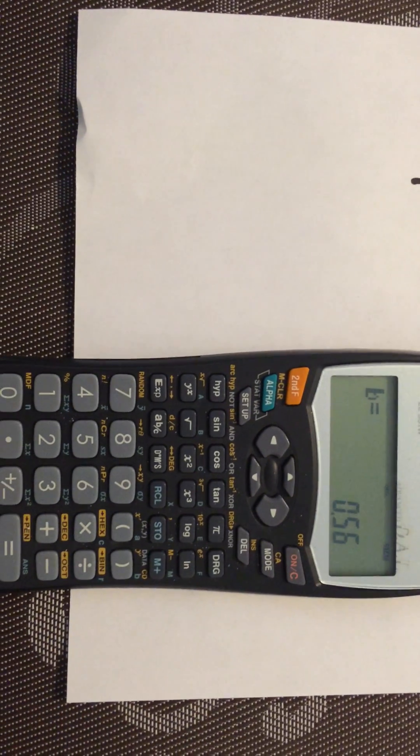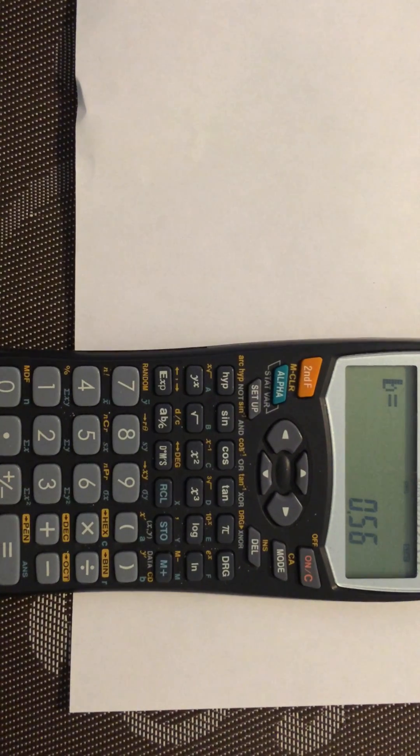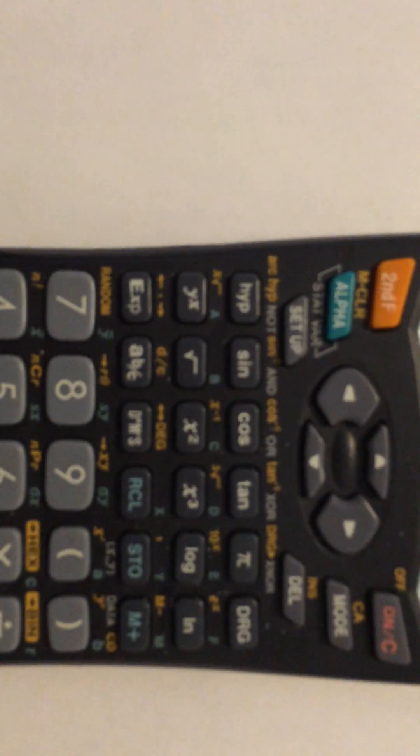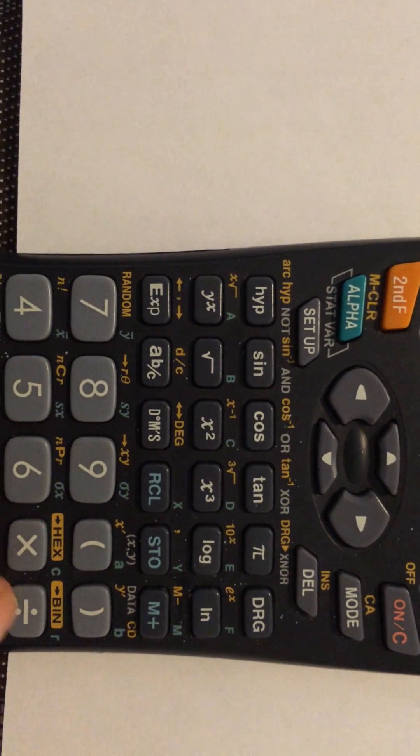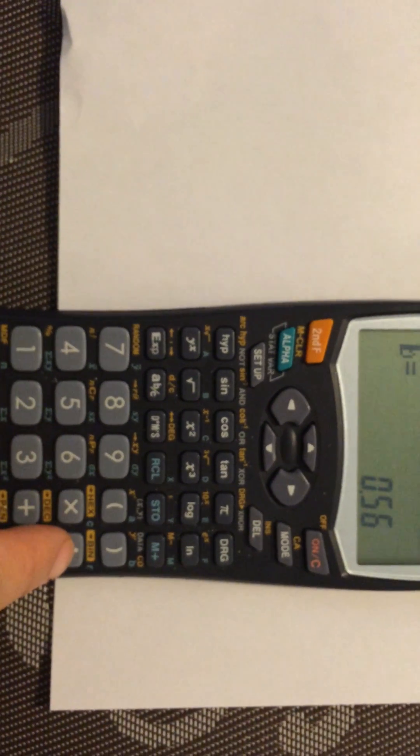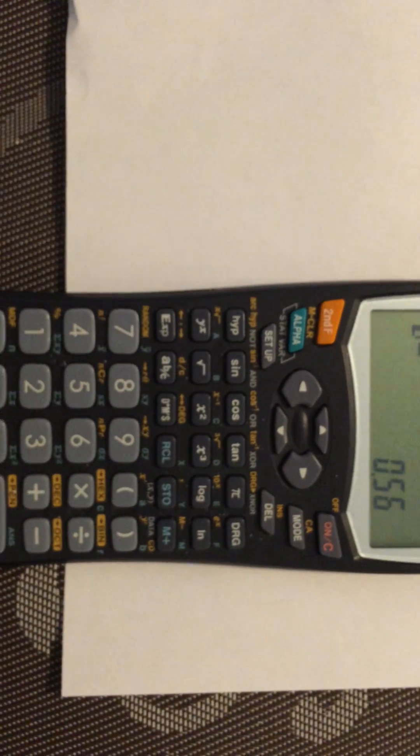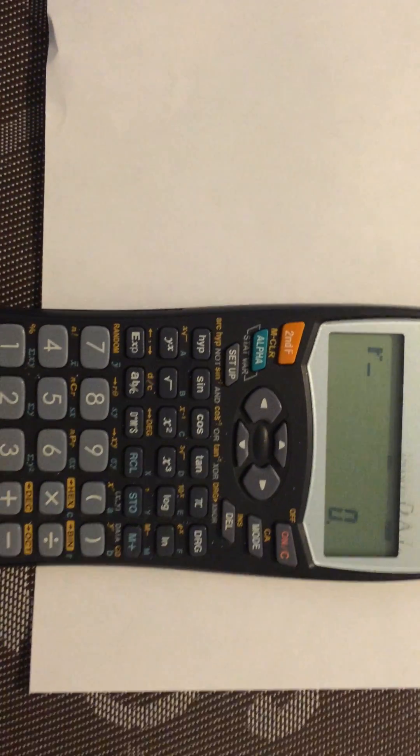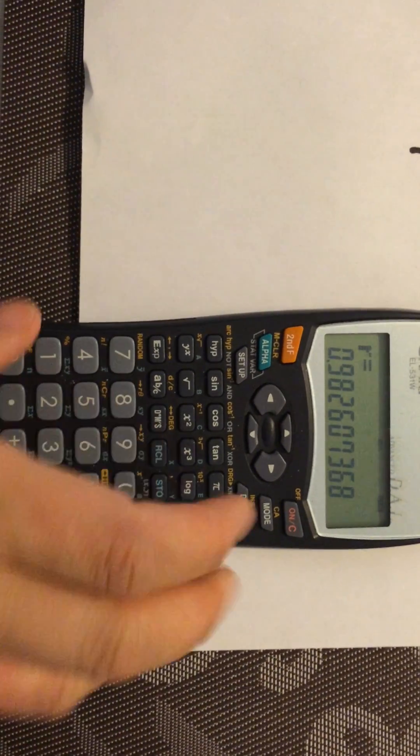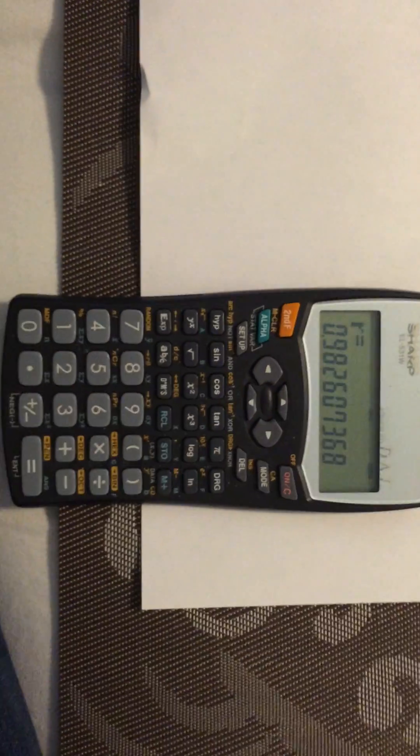The last thing is getting your R value for the regression. That's on top of the division key. Hit ALPHA, then R, then equals. There you have it, your regression coefficient.